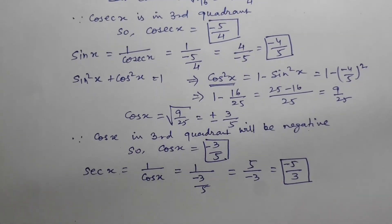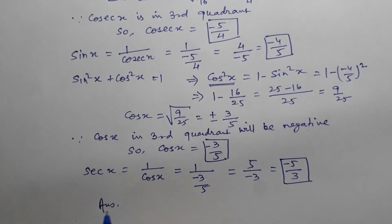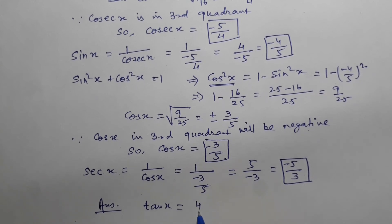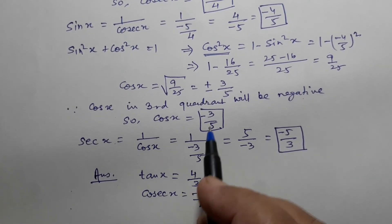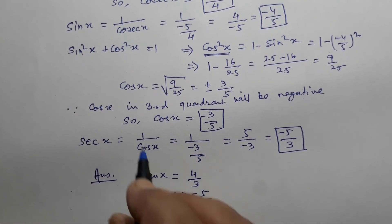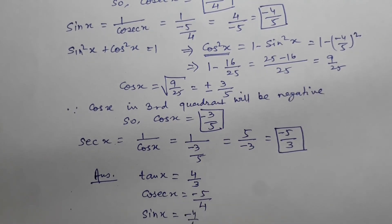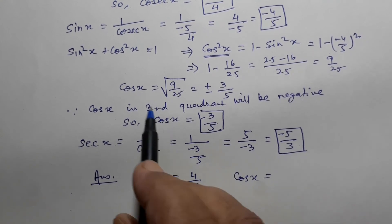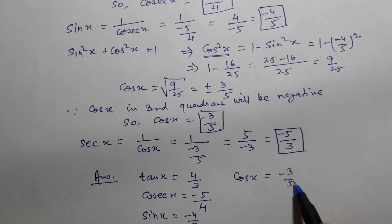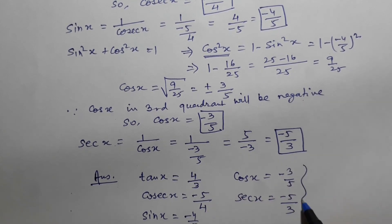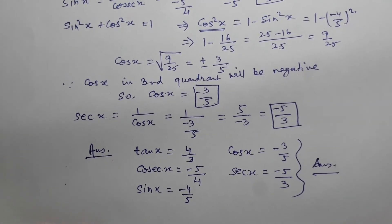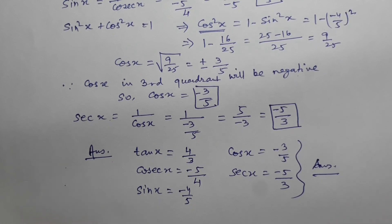We have now found all the trigonometric values. The answers are: tan x = 4/3, cosec x = −5/4, sin x = −4/5, cos x = −3/5, and sec x = −5/3. If you liked it, please share and subscribe this channel. If you have any difficulty, kindly write in the comment box and I will reply. Thanks.